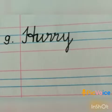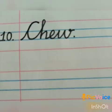Ninth one: Hurry. Hurry means to move fast — quickly. H, U, R, R, Y. Hurry. And last one: Chew. Chew means to bite and grind food with the teeth — savik kirudhu. C, H, E, W. Chew.